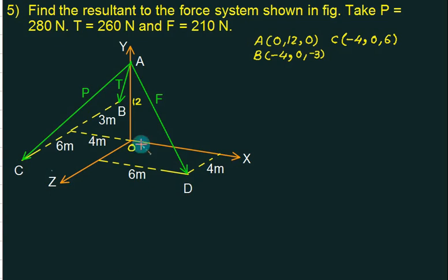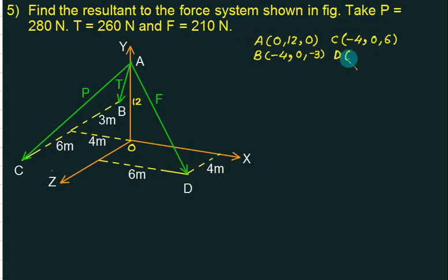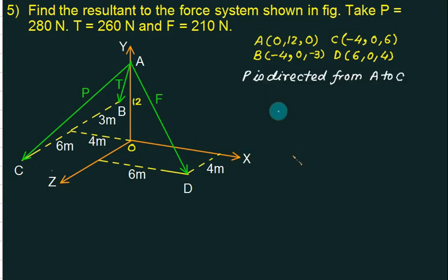For point D, traveling along x gives 6, and along z axis gives 4. So the coordinate of point D is (6, 0, 4). We now have four points A, B, C, D identified. Force P is directed from A to C.